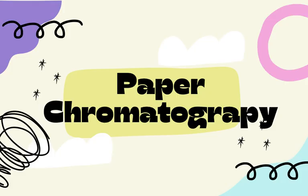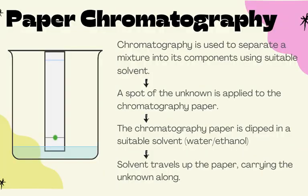Paper chromatography is used to separate a mixture into its various components, which must be able to dissolve in the solvent. Add a drop or spot onto the start line, then dip into a suitable solvent such as water or ethanol. As the solvent travels up, it carries the unknown substances with it. Key points: the start line must be drawn using a pencil, and the solvent level must be below the start line.